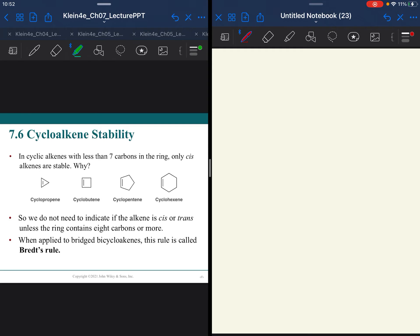We are not going to worry about cycloalkene stability beyond this. Cyclic alkenes with less than 7 carbons in the ring can only exist in the cis conformation, can't be trans. That has to do with the fact that you still somehow need to be able to reach around and connect.